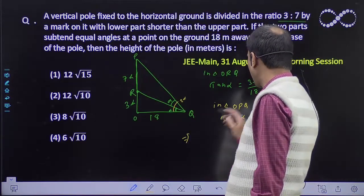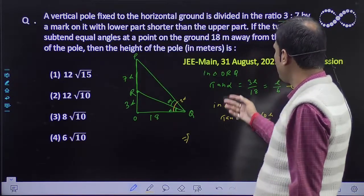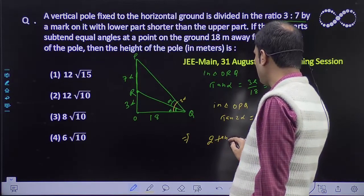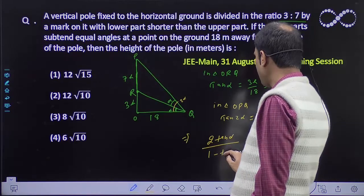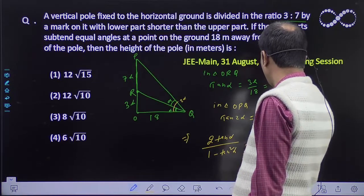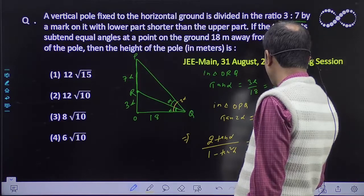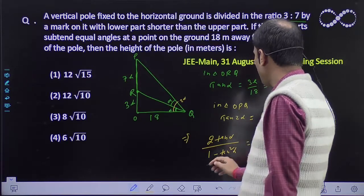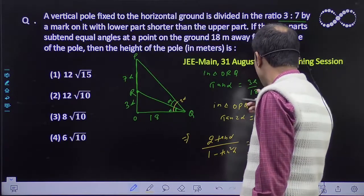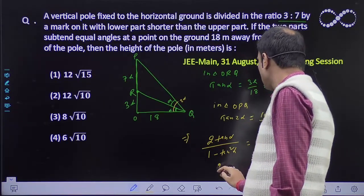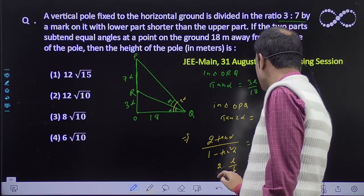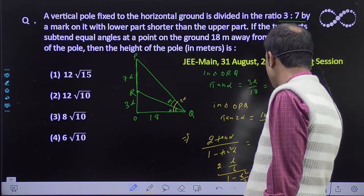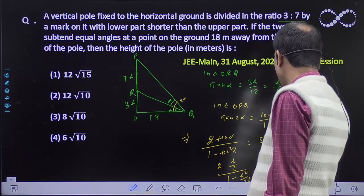Now see here, tan 2 alpha, let's write it in terms of tan alpha because here we have the value of tan alpha. So 2 tan alpha upon 1 minus tan square alpha equals 5h upon 9.